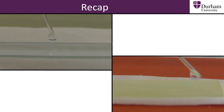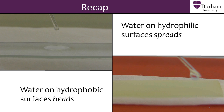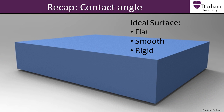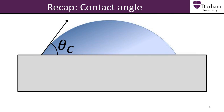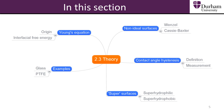In previous sections we have learnt that water spreads on hydrophilic surfaces and beads on hydrophobic surfaces. We defined ideal surfaces as well as the contact angle of water, and said that contact angles were a measure of spreading or beading of water on a surface. Here is a mind map of the topics we will cover in this section. Let's begin by looking at Young's equation.